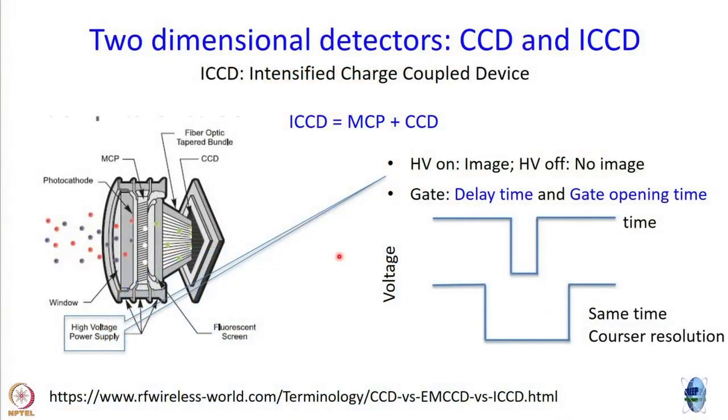Now, let us get back to the presentation. So, using this intensifier MCP, something that is a little more sophisticated than just ICCD is often used and that is called a streak camera.